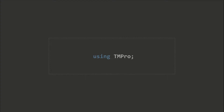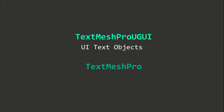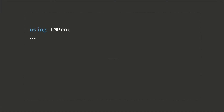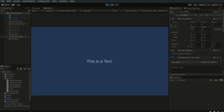We first need to add the import TMPro statement at the top of the script. TextMeshPro objects can be rendered as UI elements and in-game 3D objects. The former is of the class TextMeshProUGUI, and the latter is of the class TextMeshPro. We will define a TextMeshProUGUI reference called sampleText. To change the content of the text, we can simply assign a string value to sampleText.text. When we run the game, the text changes as expected.